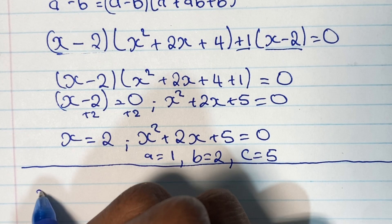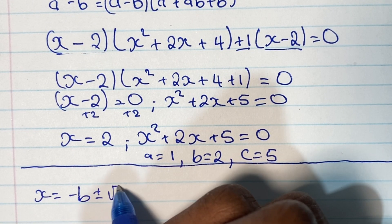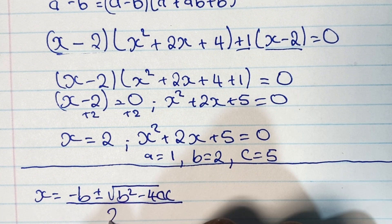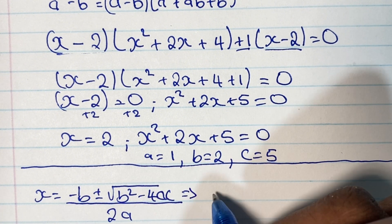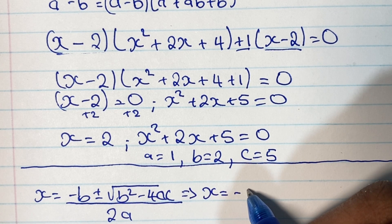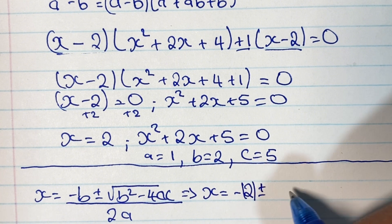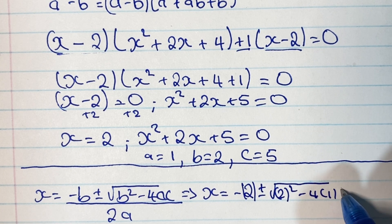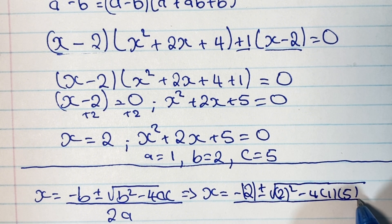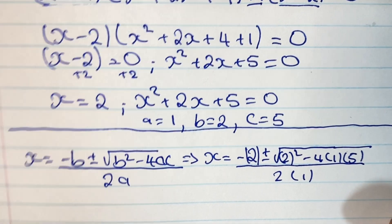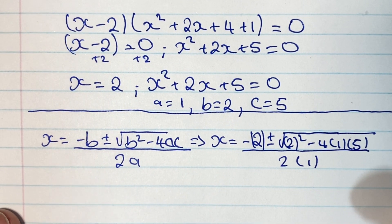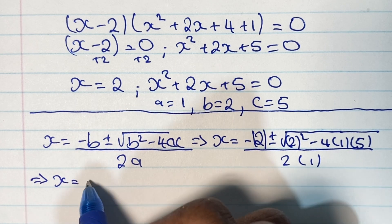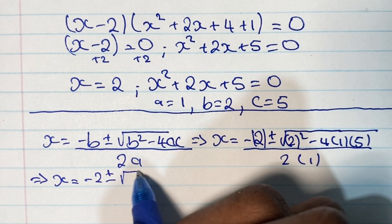The quadratic formula is x equals negative b plus or minus the square root of b squared minus 4ac, all over 2a. Plugging in our values, we have x equals negative 2 plus or minus the square root of 2 squared minus 4 times 1 times 5, all over 2 times 1.